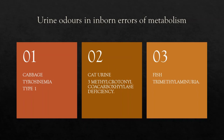Let's have a look at certain urine odors in some inborn errors of metabolism. If the urine smells like cabbage, suspect tyrosinemia type 1. If it smells like cat urine, 3-methylcrotonyl-CoA carboxylase deficiency should come to your mind.